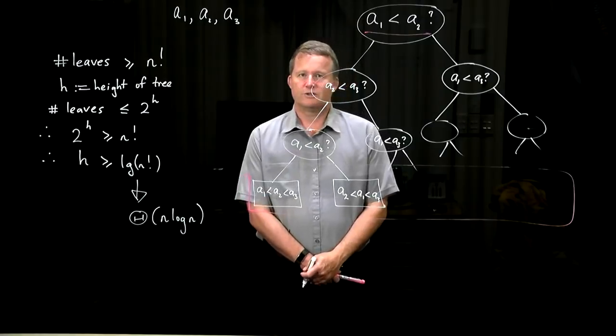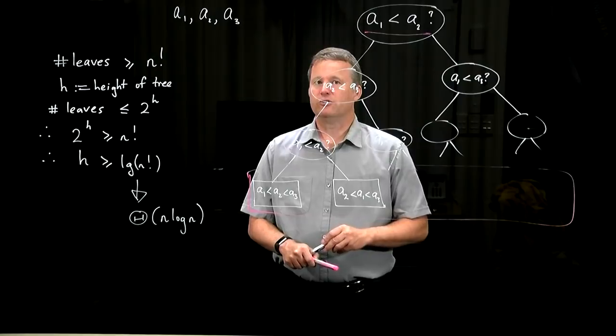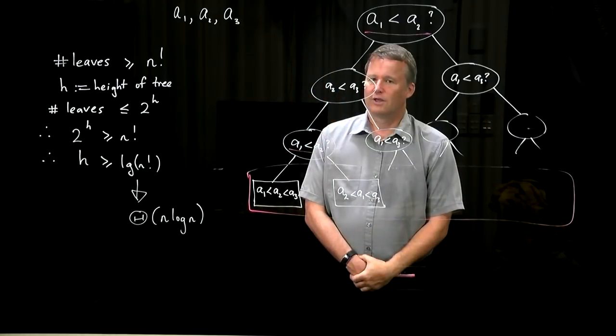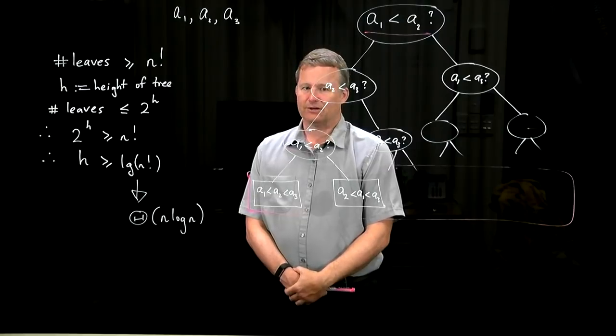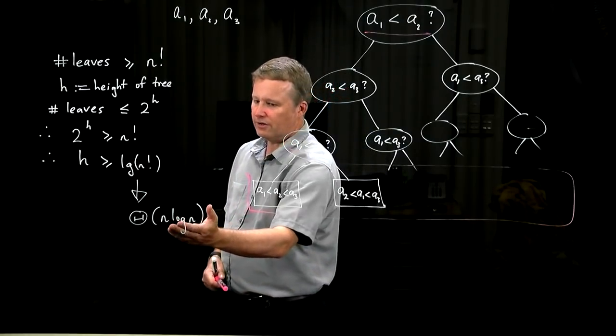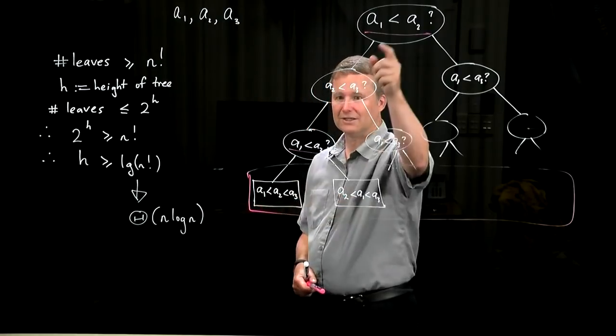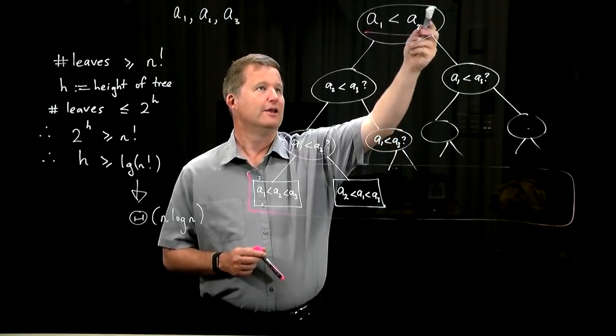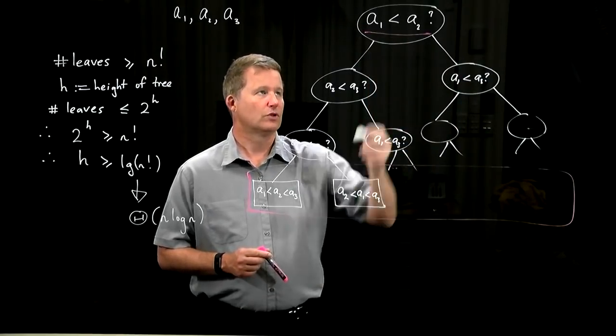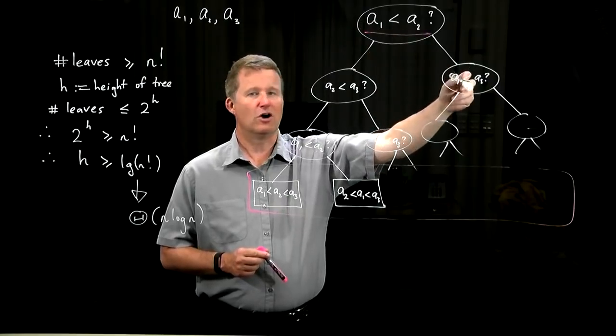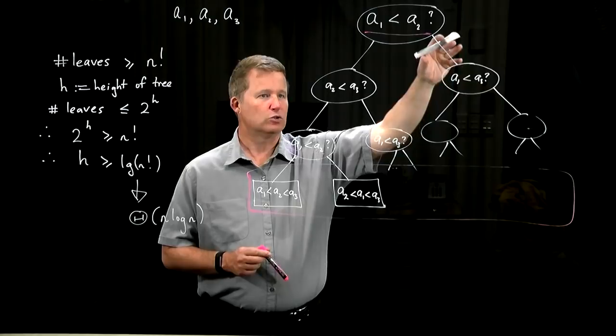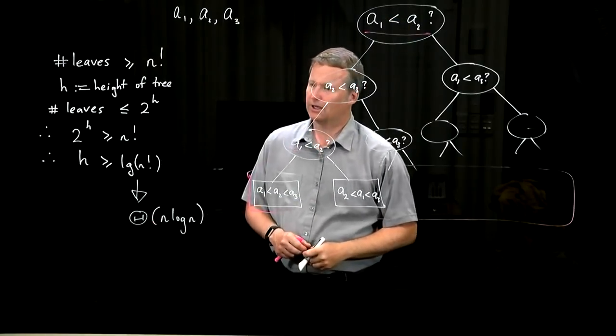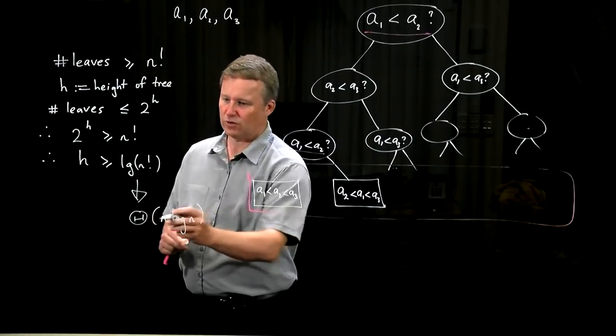So what we've concluded is that if we have a general-purpose comparison-based sorting algorithm that works on input of size n, then there's at least some input that's going to make it do this amount of work, because this is the number of comparisons you need to do to get to the bottom of the tree. We know there are algorithms like insertion sort, for example, where the leaves don't always end up at the same level. You might make lucky guesses early on and not have to do any more. We know that. We're not talking about the best case, we're talking about the worst case. That's the height of the tree, the longest path from the root to a leaf. And what we've showed here is that the longest path must be at least of order n log n.